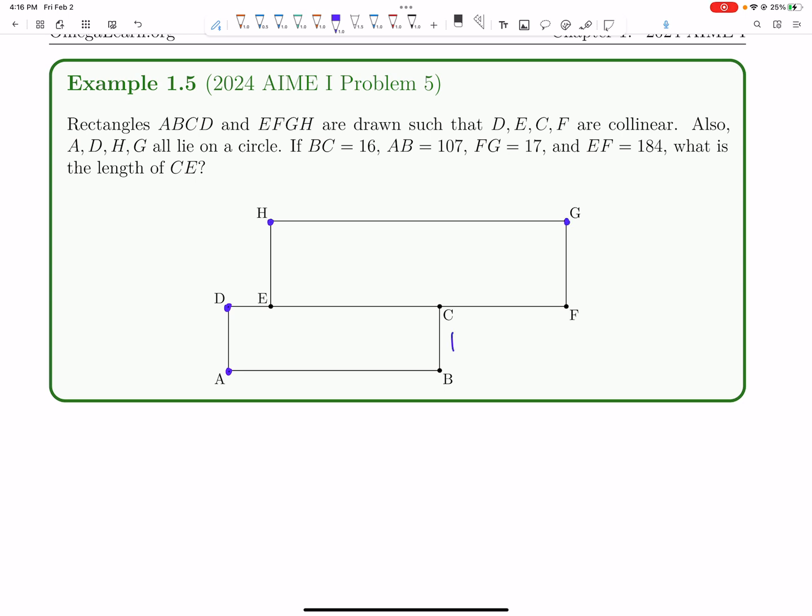So BC is 16, AB is 107, FG is 17, EF is 184. What's the length of CE?